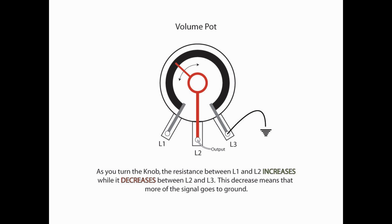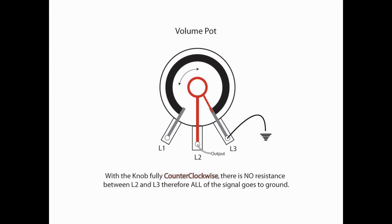Now, as we start to turn the knob down, what's happening is we are, in effect, increasing the resistance between L1 and L2, and we're decreasing the resistance between L2 and L3. That decrease means that more of the signal is going to ground or is just going nowhere. Now, if we were to have the knob fully counterclockwise, there's going to be no resistance between L2 and L3. Therefore, the entire signal, everything that's coming out of your pickups, is going to ground or basically going nowhere.